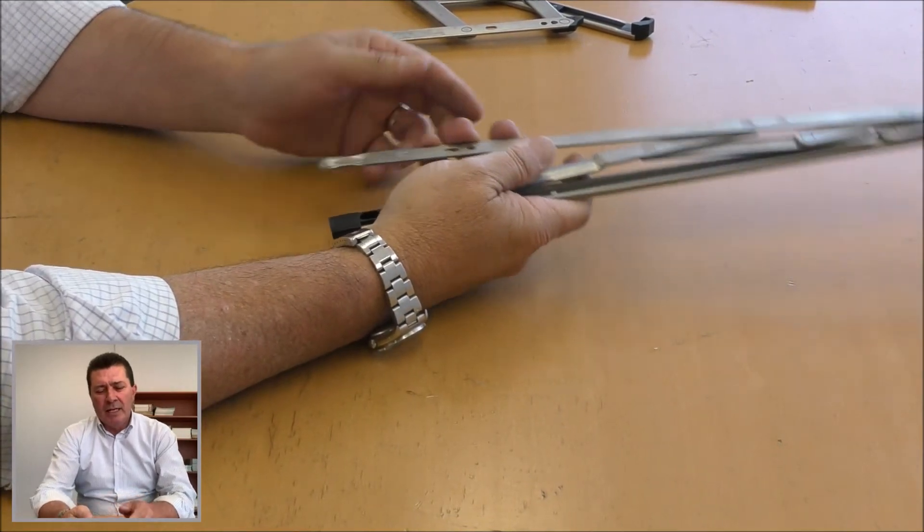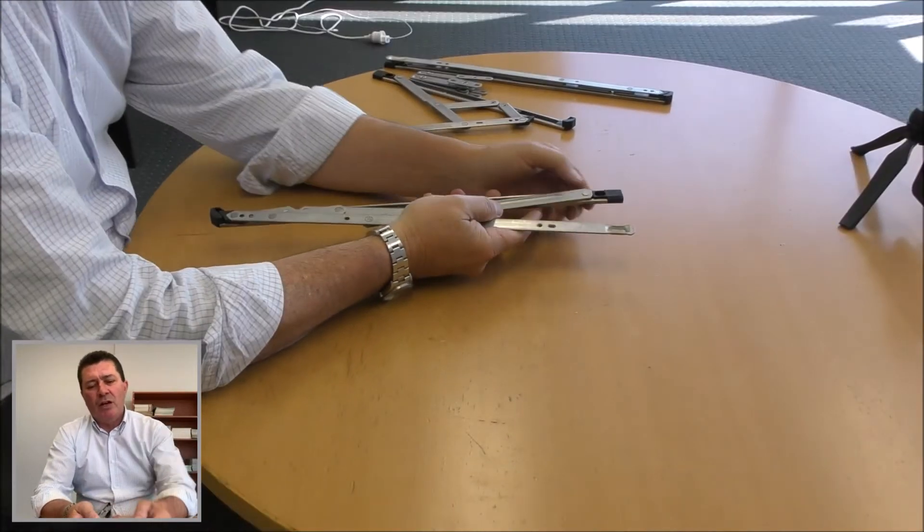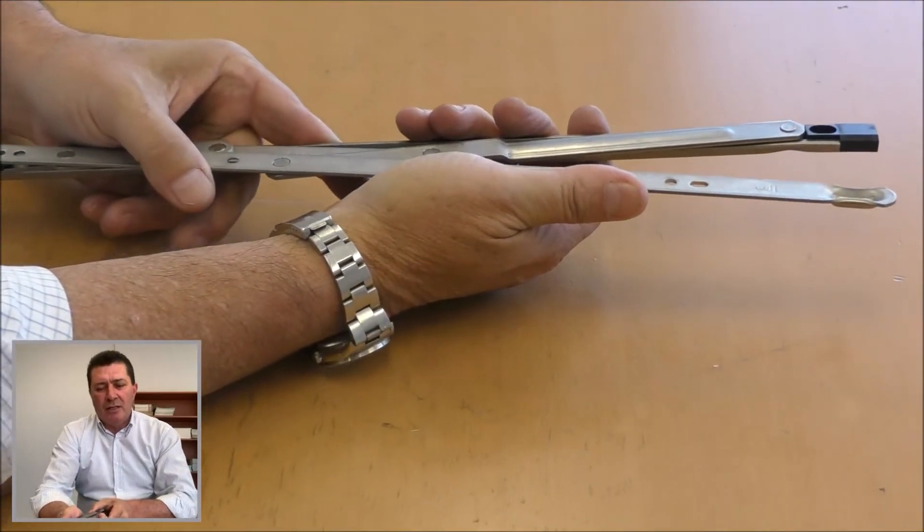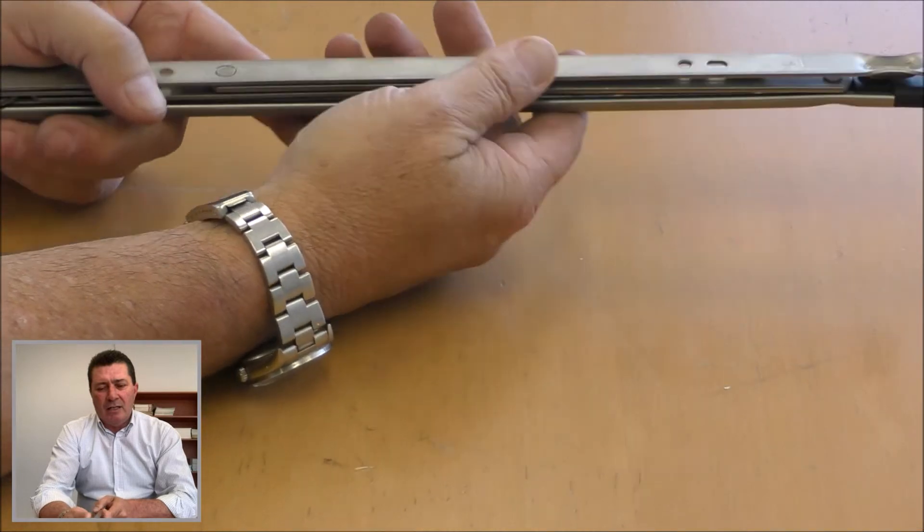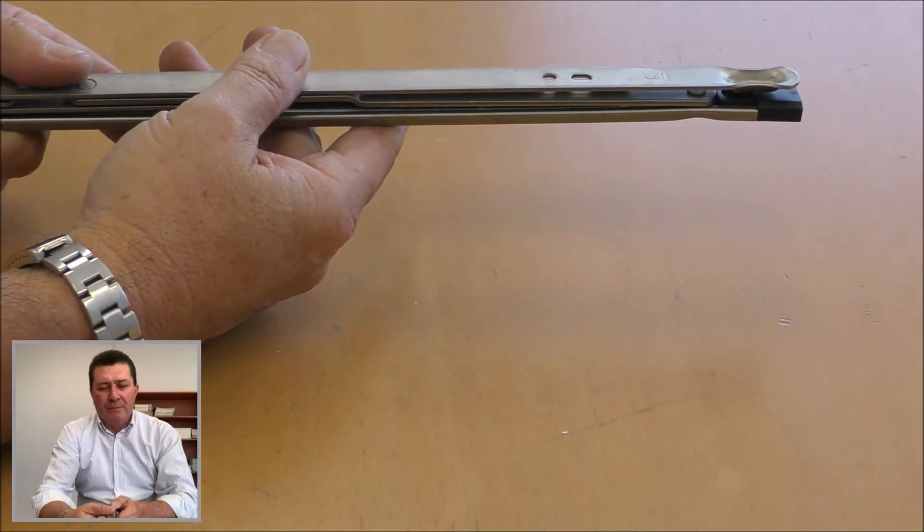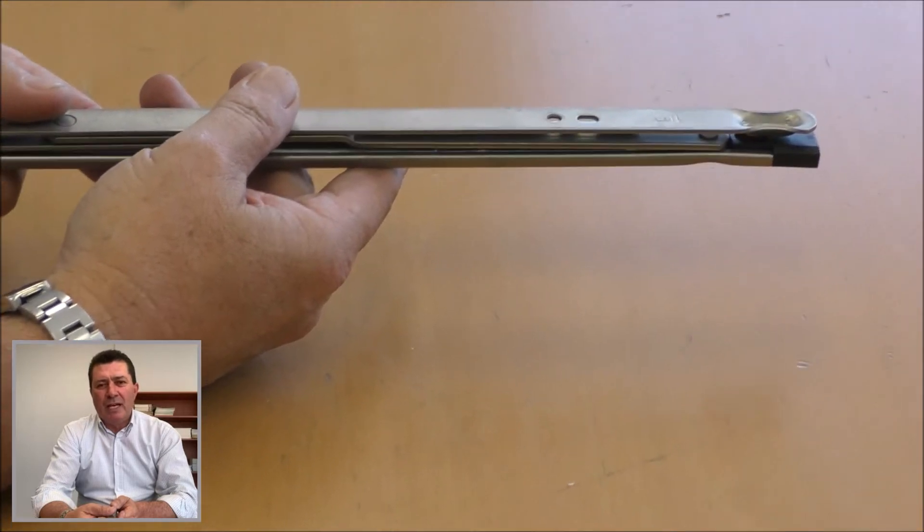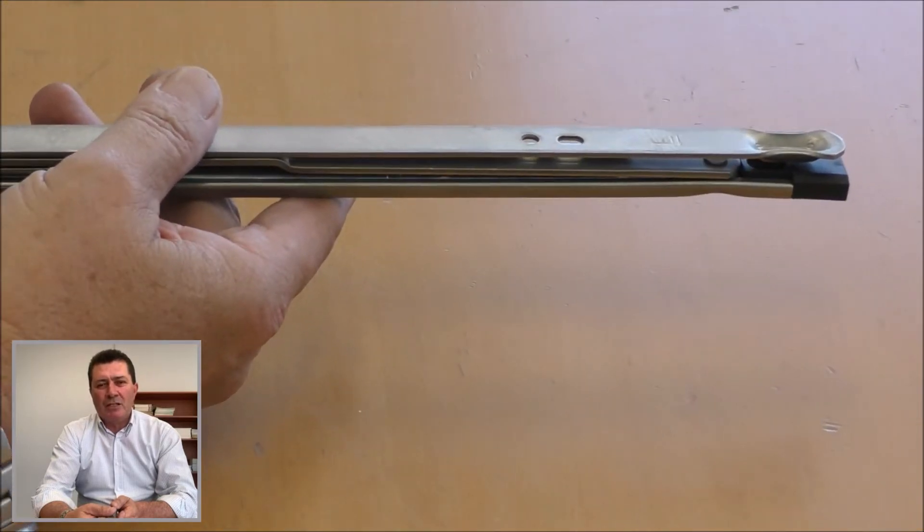What we've done is built in a riser block so that when the window shuts, it self-levels and squares into the frame, getting rid of that age-old problem of casement windows dropping and not coming back square.